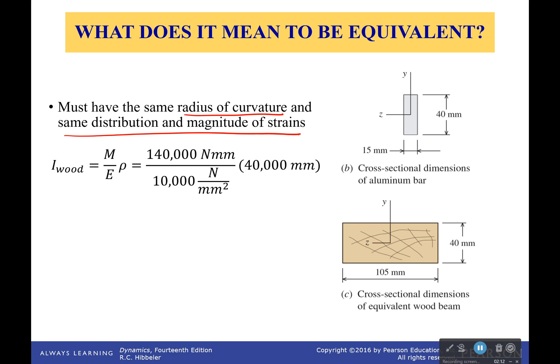So if we're looking at it right here, the moment of inertia for the wood would have to be 560,000 millimeters to the fourth. We're kind of reversing it here. The radius of curvature has to stay constant. Modulus of elasticity we take from wood. The moment is given to us earlier. And so if we look at it, we have to then calculate, well, because our radius of curvature is the same, because our distribution of strains has to be the same, it means that these will not have the same exact shape.